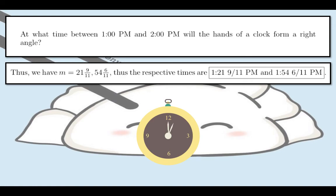And they correspond to the times 1:21 9/11 PM and 1:54 6/11 PM. Now, just going back to the animation again, we found out that one time is right after 1:15 and the other time is right before 2 o'clock. And these two satisfy those two approximated times from our preliminary analysis. So that is how you answer this.